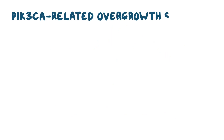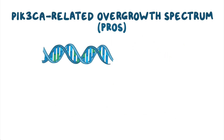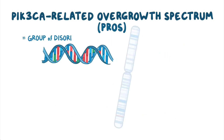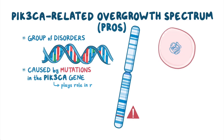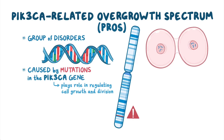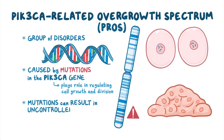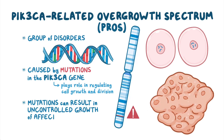PIK3CA-related overgrowth spectrum, or PROS, is a group of disorders caused by mutations in the PIK3CA gene, which plays a role in regulating cell growth and division. As a result, mutations can result in uncontrolled growth of affected tissues.